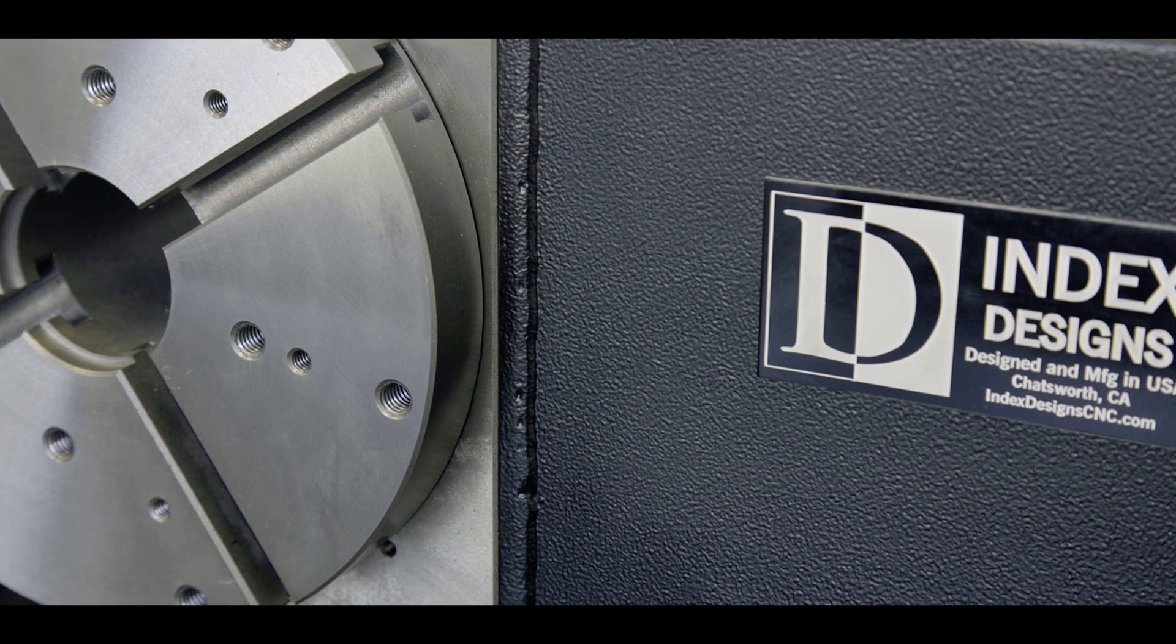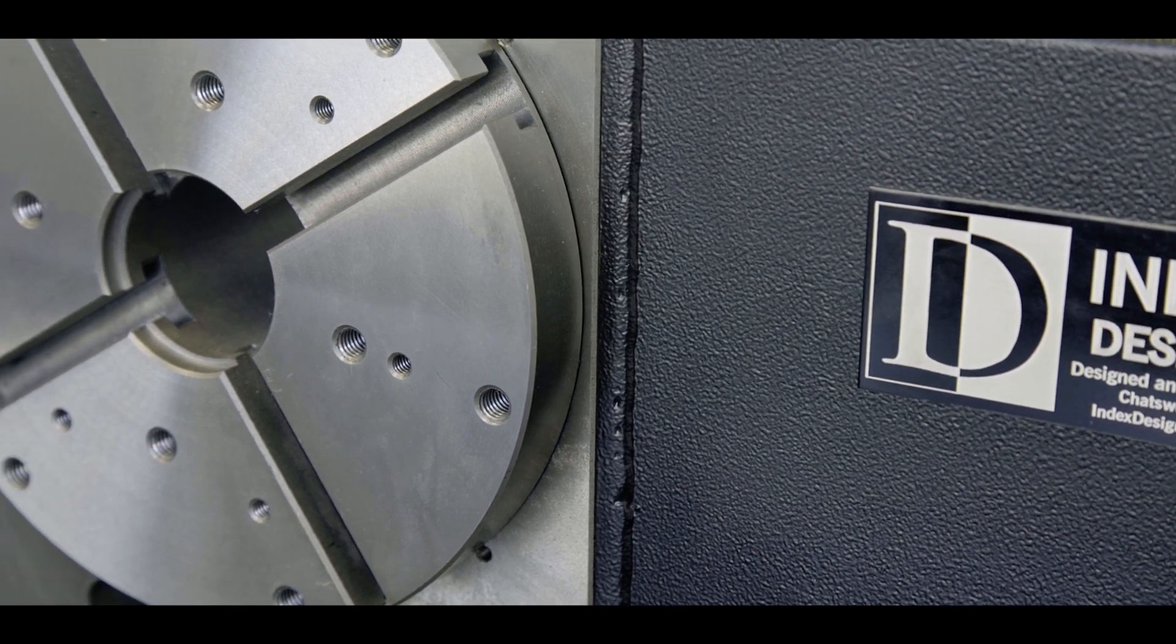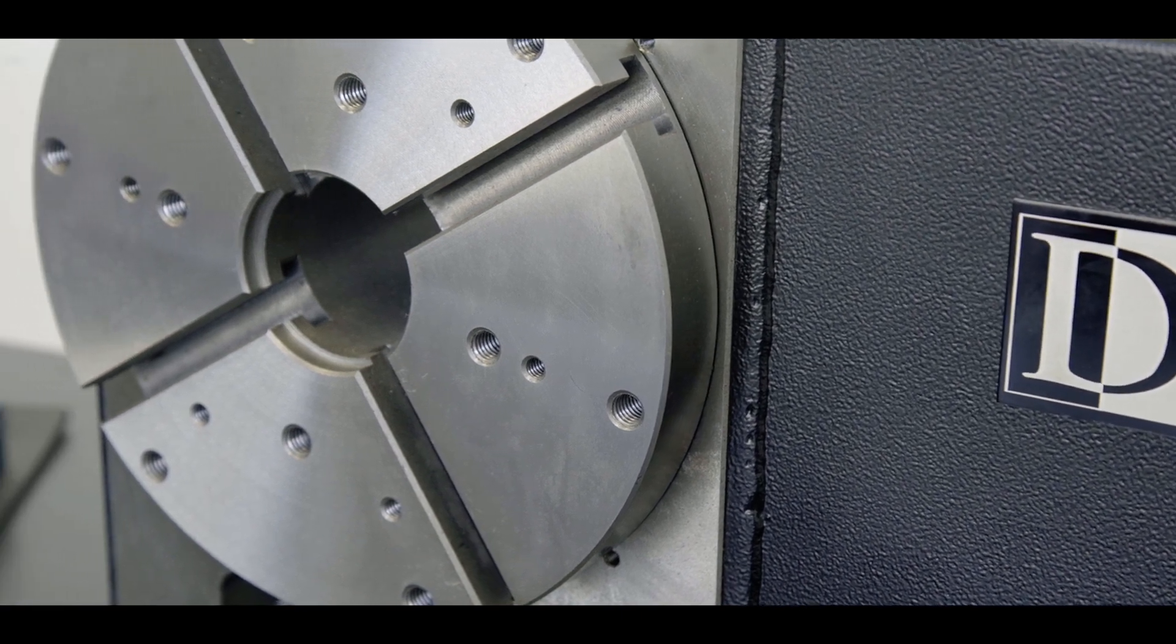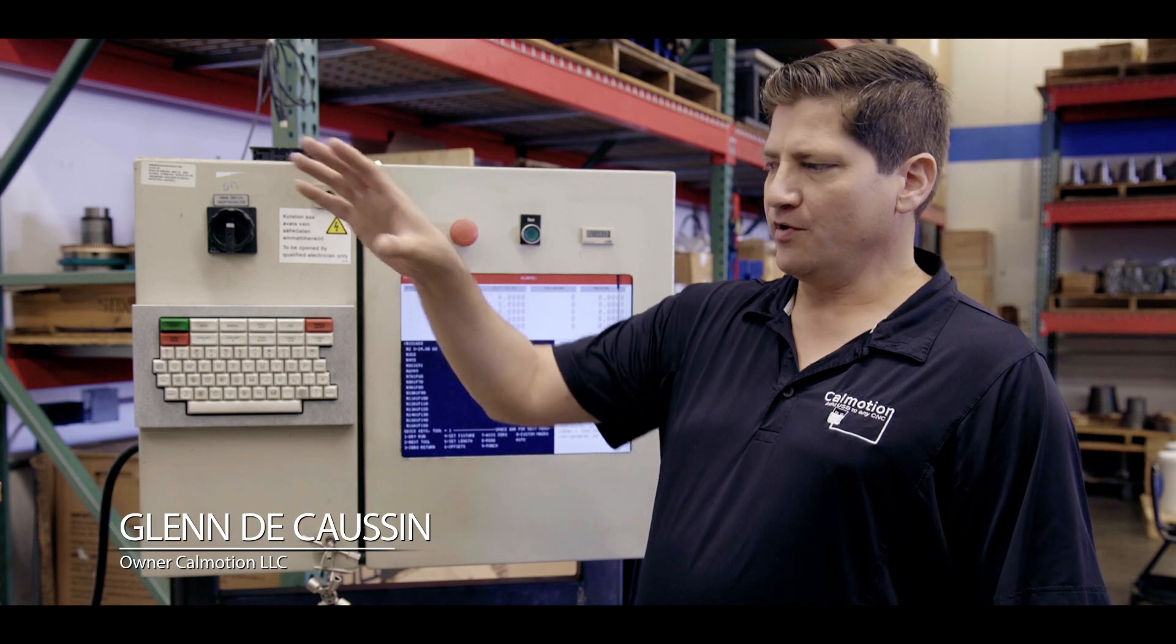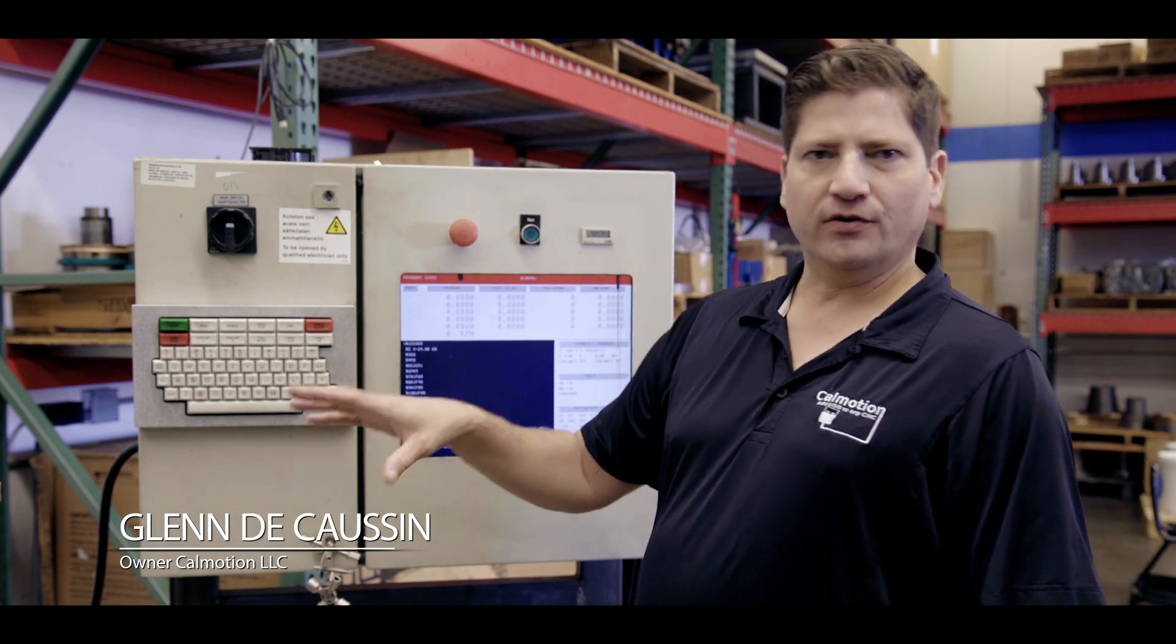Index Designs asked CalMotion to implement a control solution for the gear cutting machine. We implemented the control with a three-axis system for simultaneous gear cutting.